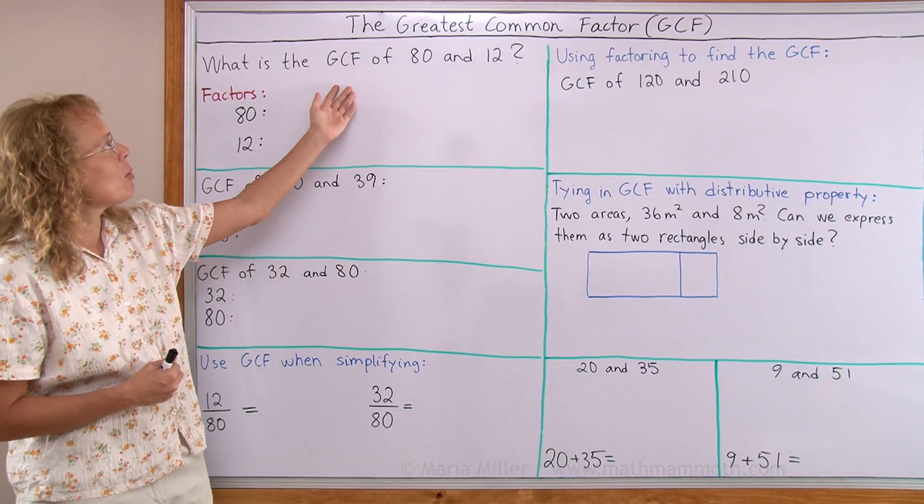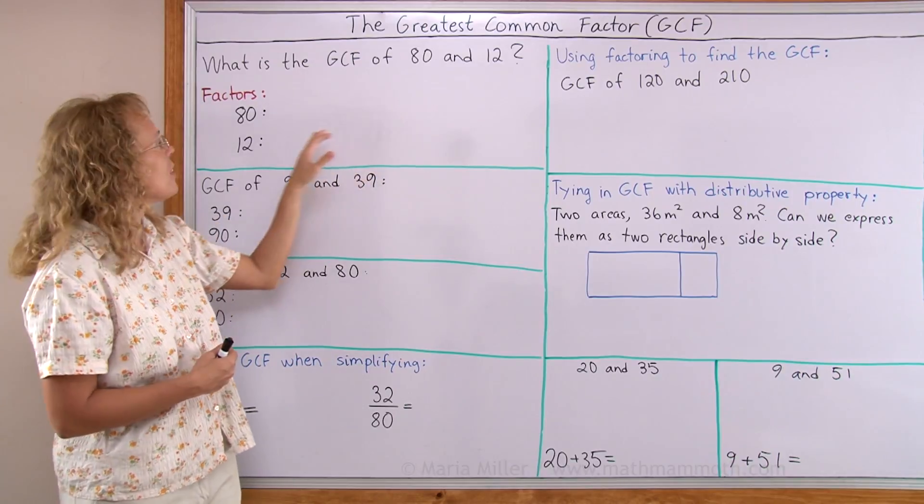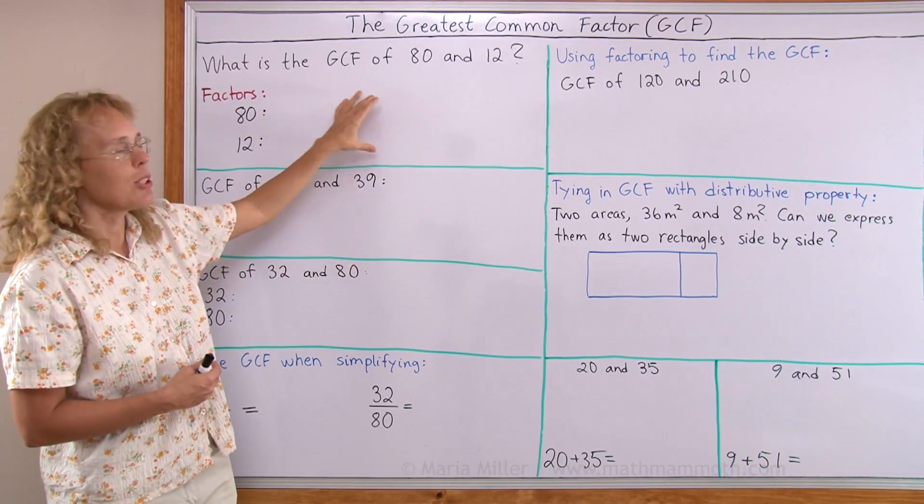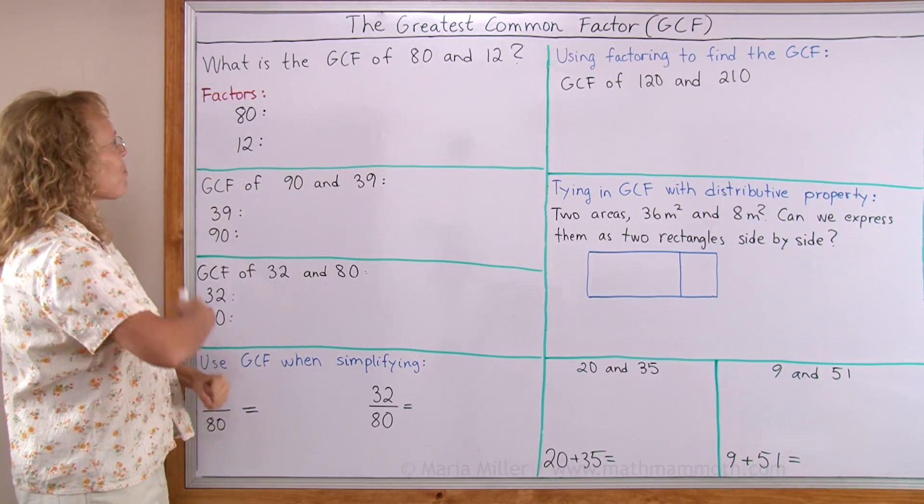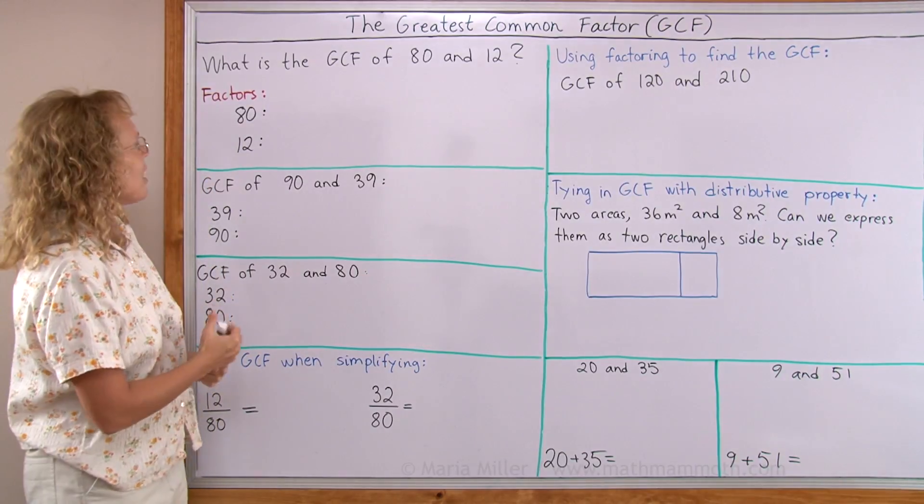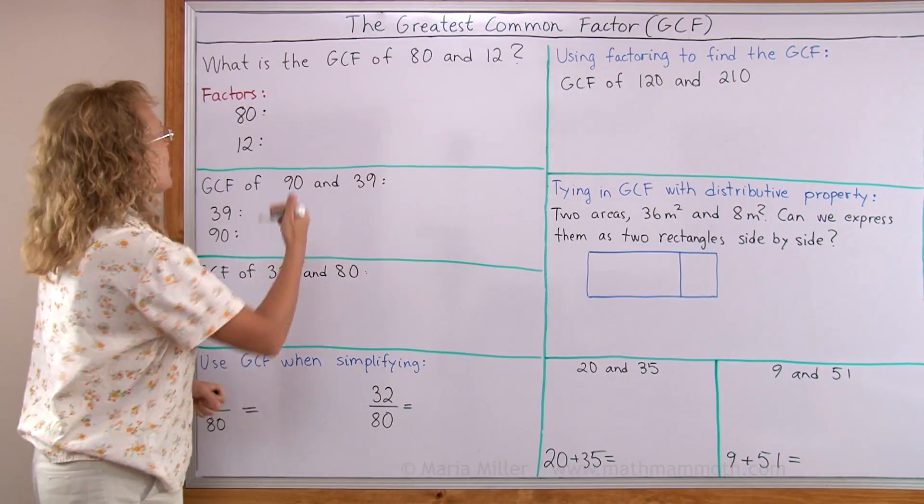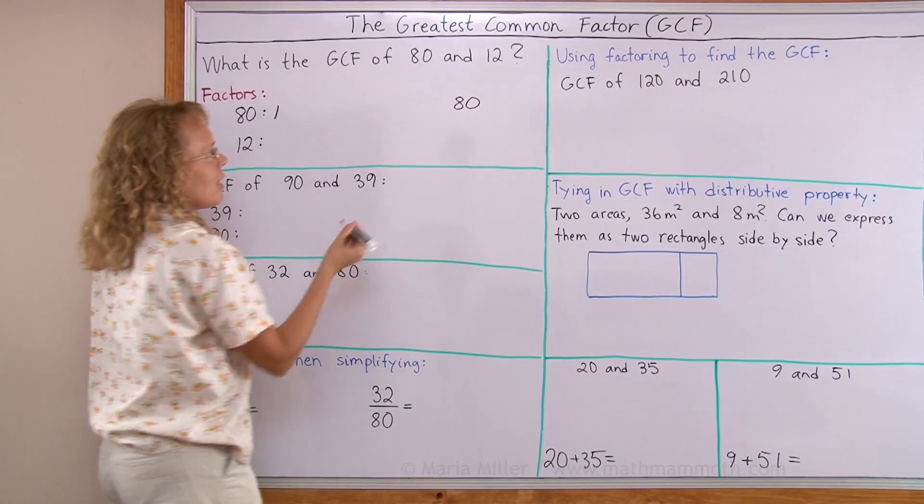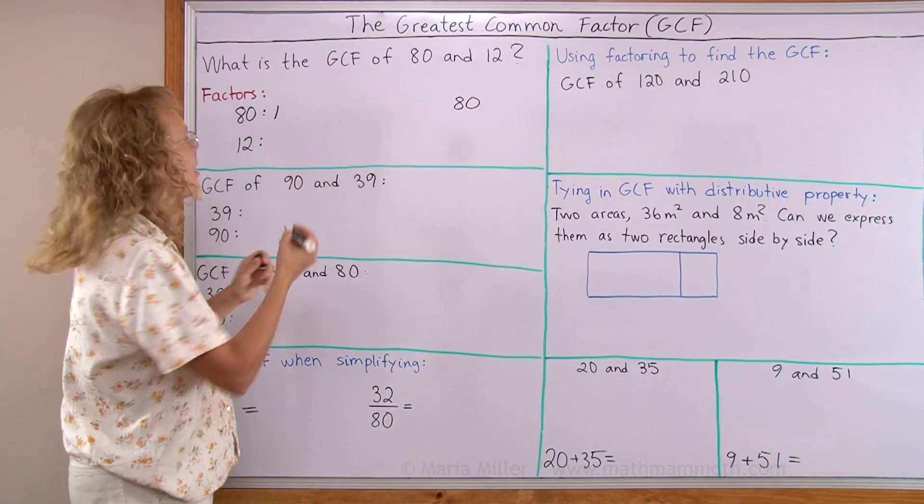What is the greatest common factor of 80 and 12? Basically I'll make a list of factors for 80, a list of factors for 12, and then check over there which ones are common and then choose the greatest of those. Now first of all, how do you find all the factors of a number? I'll start out with number 1 because 1 times 80 equals 80. So 1 and 80 are factors of 80, and I'll write 80 way over here because I want to have my factors in order here as a list.